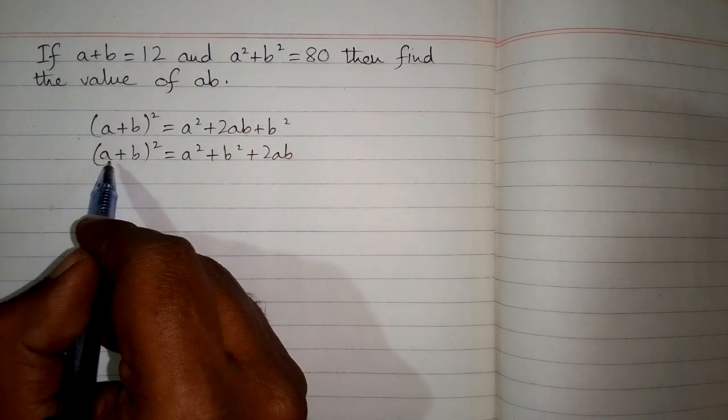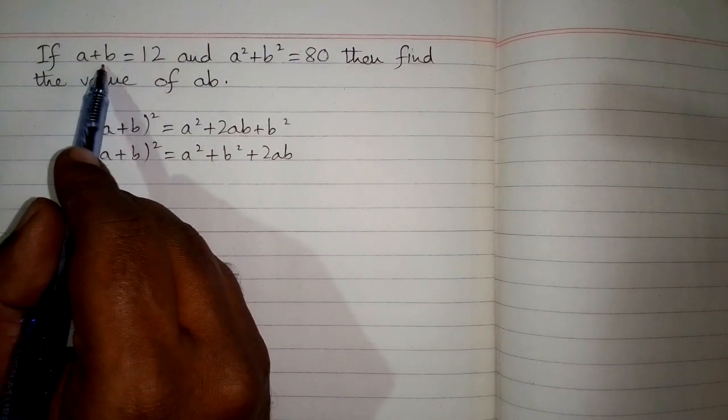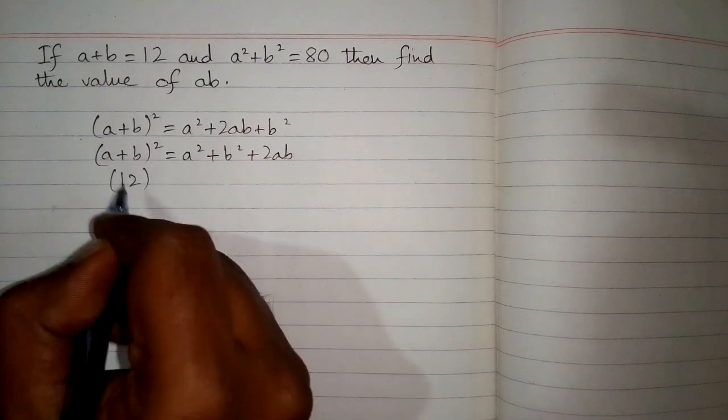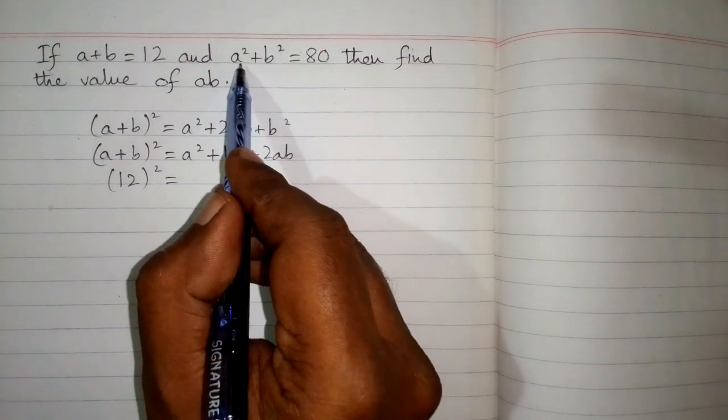Now we can substitute the given values. The value of a + b is 12, so we put 12 in place of a + b.